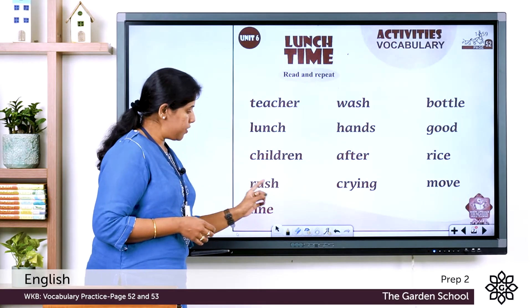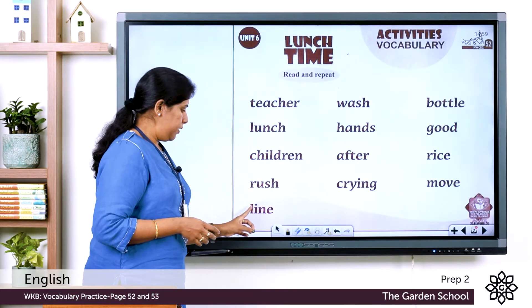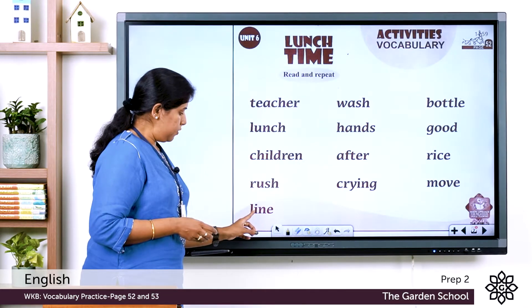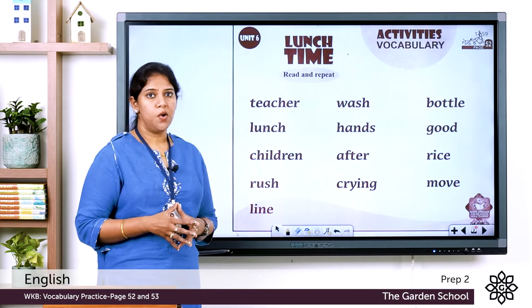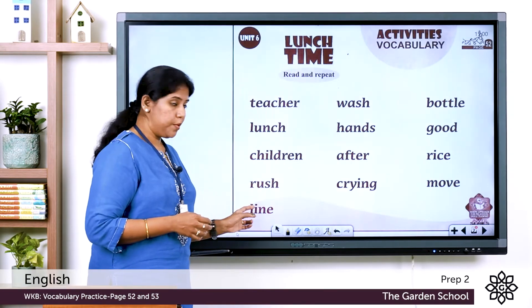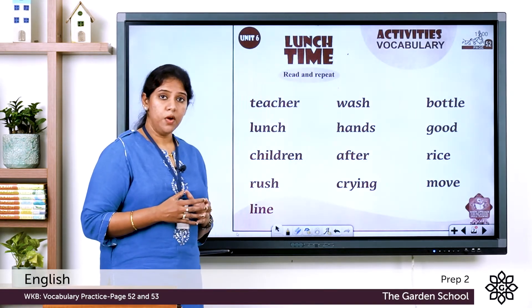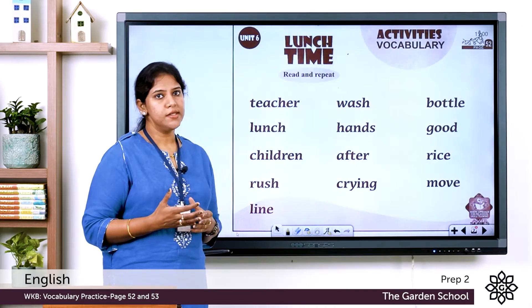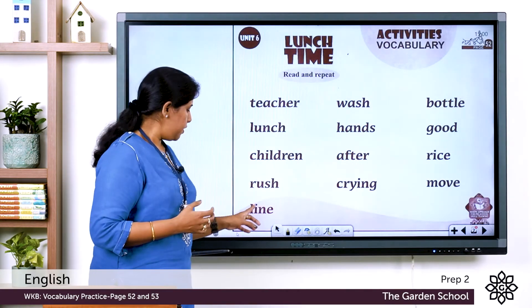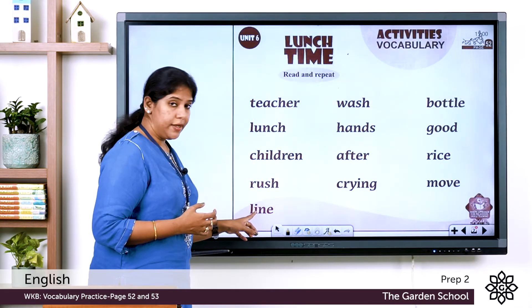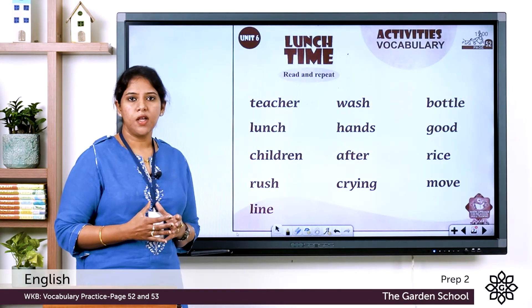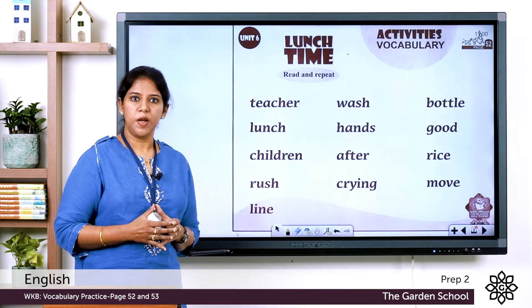R — rush. L — lie. We learned the sound. Now the first word is I. Ice cream. Ice cream starts with I. What sound? I sound, right?